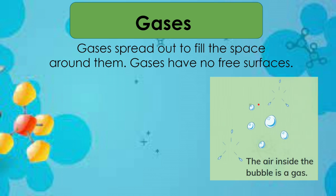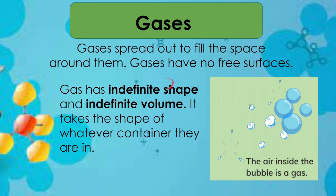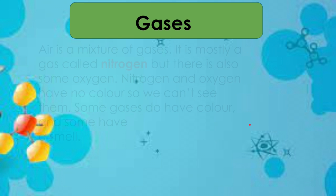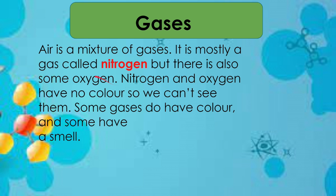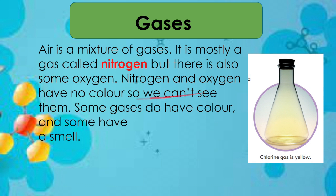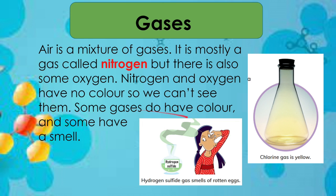Now let's talk about gas. Gases spread out to fill the space around them and have no free surfaces. Gas has indefinite shape and indefinite volume — it takes the shape of whatever container it is in. The air inside a bubble is a gas. Air is a mixture of gases; it is mostly nitrogen, but there is also some oxygen. Nitrogen and oxygen have no color, so we can't see them. Some gases do have color and smell — for example, chlorine gas is yellow with a pungent, strong sharp smell, and hydrogen sulfide gas smells of rotten eggs.